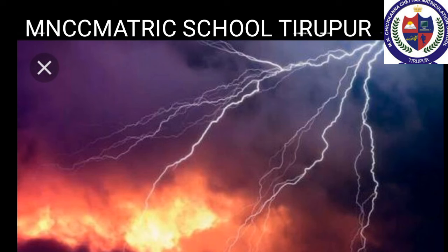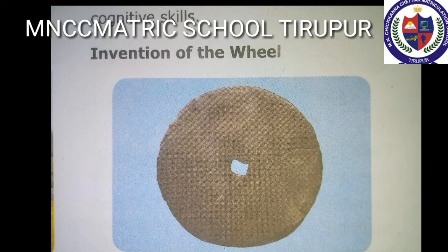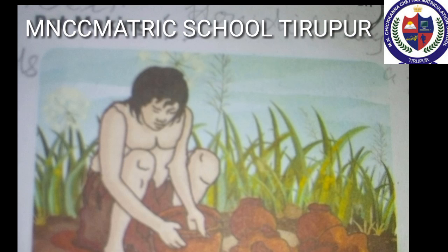Thus, fire became important for humans in olden days. Students, what was the first scientific invention of humans? The invention of the wheel by humans is considered to be the foremost invention. When humans saw stones rolling down from the mountains, probably they would have got the idea of making the wheel. Humans learned to make pots with clay. The invention of the wheel made pot-making easier, and the pots made were burnt to make them stronger. We have completed the first part now. We will continue this lesson in the next video. Thank you, students.